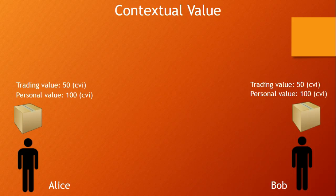As a result, when they trade, the values swap. The trading value of Alice's package is now 50, because Bob views it as 50 — but she has more value for it, so she is going to hold onto it and not sell it, because there is nothing of greater value that anyone would give for that package. The same case goes for Bob. Because of this, if they both trade, they both win. But if the transaction is reversed, they would both lose.